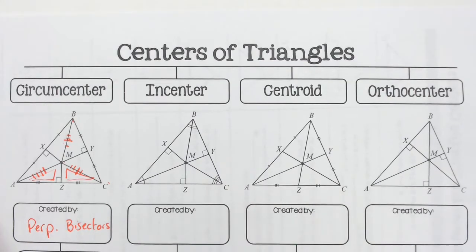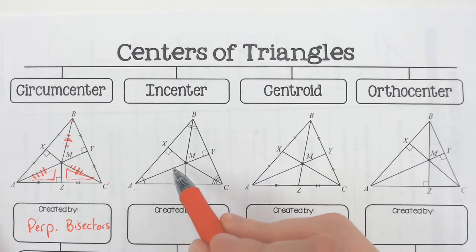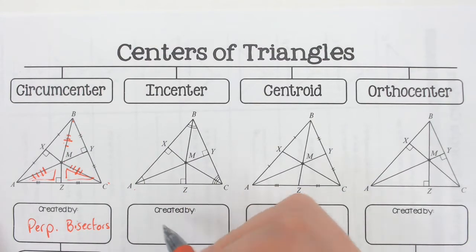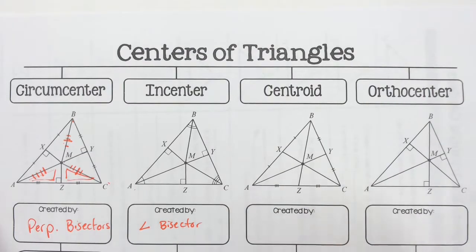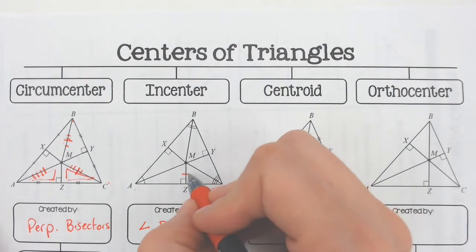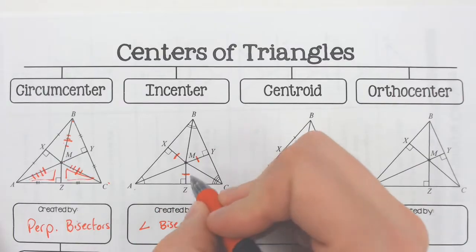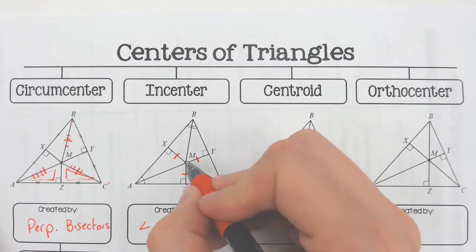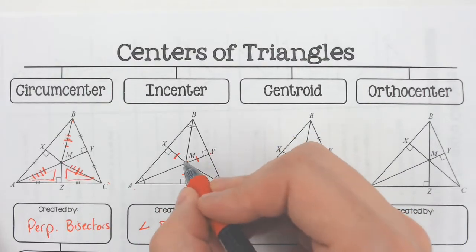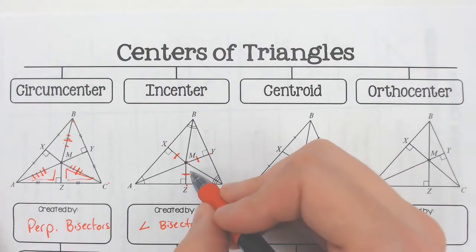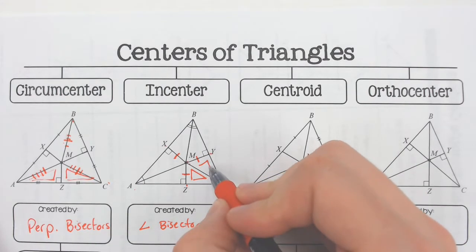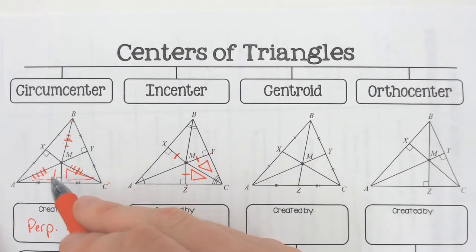The incenter, however, is created by the angle bisectors — you cut the corners in half. It is created by the angle bisectors, and the part that's congruent is from the side to the center, from the side to the center, and from the side to the center. The triangles that are congruent are from the corners as well, not from the sides.